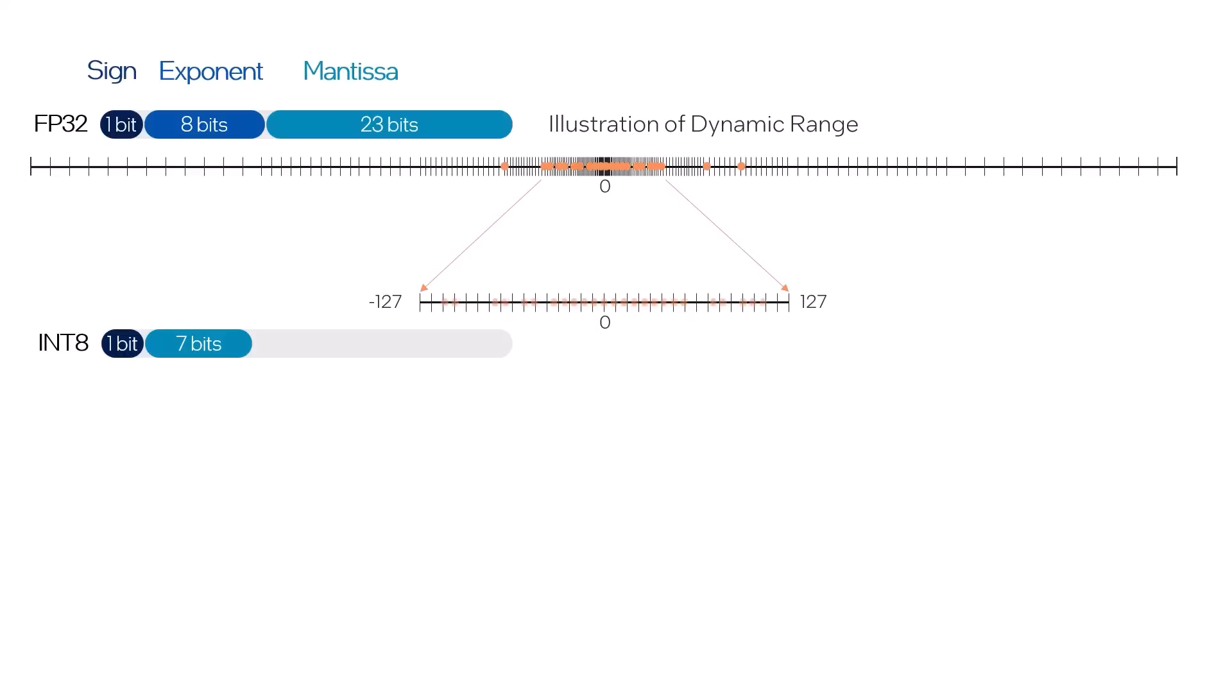So the quantization process needs to figure out the right range of values for a given set of parameters, and that might include clipping some outliers to control the size of the range, and based on that, calculate the scale factor for the mapping.